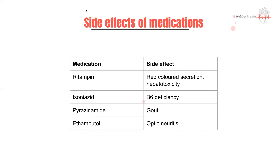You need to know the common side effects of these medications — know them inside out as they come up on exams. Rifampin causes red-colored secretions including tears, vomit, and urine due to its red color. Isoniazid presents with B6 deficiency and can present with peripheral neuropathy. Pyrazinamide, because of its role as a purine antagonist, can present with gout. Ethambutol can present with optic neuritis that can often lead to red-green color blindness.